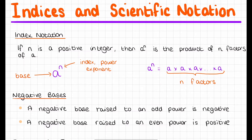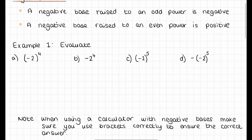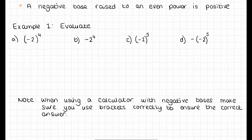Now we have negative bases. A negative base raised to an odd power is negative, and a negative base raised to an even power gives a positive answer. So for the first example, we have negative 2 in brackets to the power of 4, which means negative 2 times negative 2 times negative 2 times negative 2 — four times because that power is 4. If you work that out, you get 16. Because it's an even power, we get a positive answer.